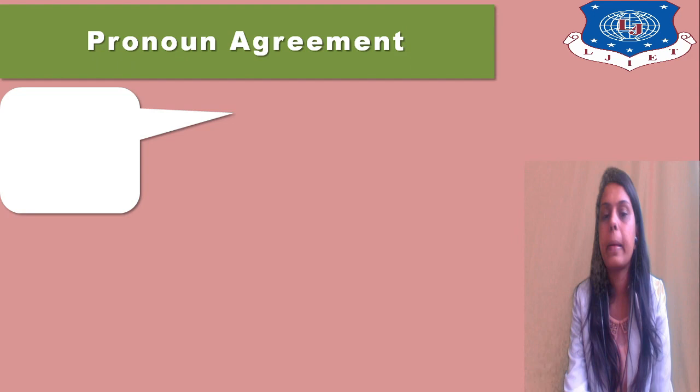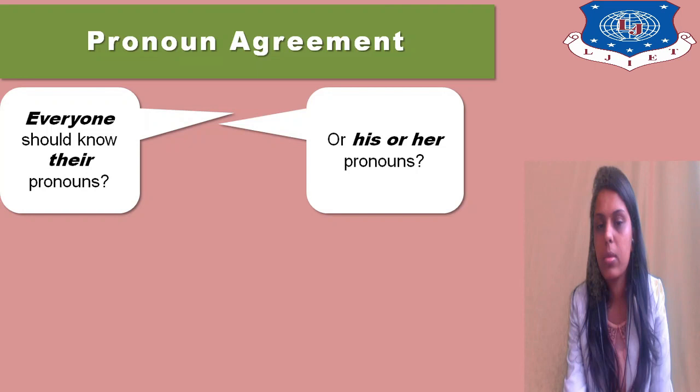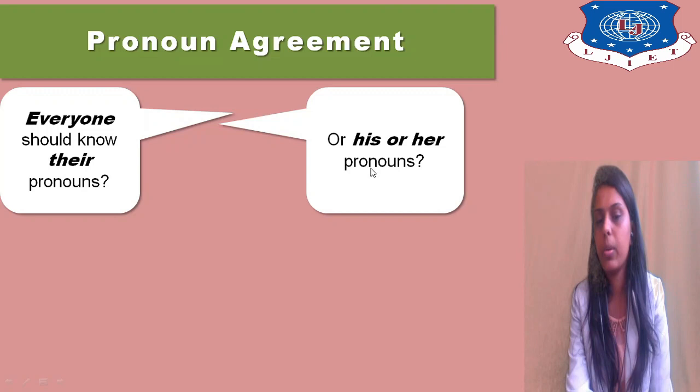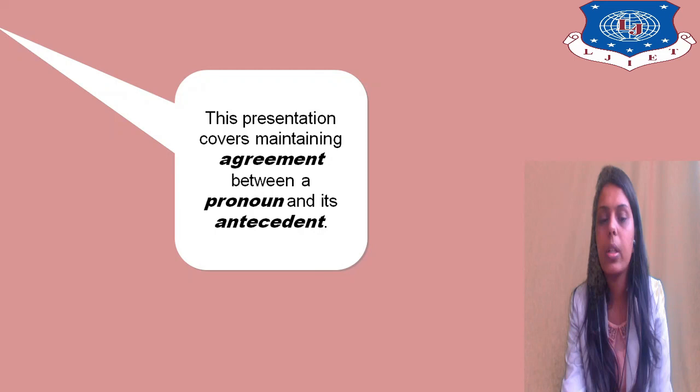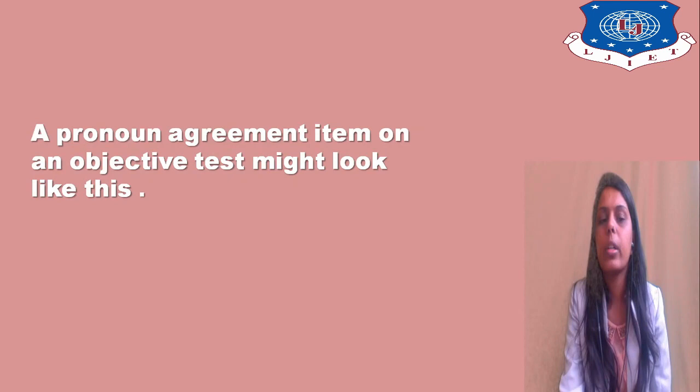Today we are going to start with noun-pronoun agreement — how a noun and pronoun will agree with each other. The presentation covers agreement between a pronoun and its antecedent, so the subject and its pronoun. Whenever the agreement between them is covered, that falls under the noun-pronoun agreement chapter. A pronoun agreement item on an objective test might look like this.